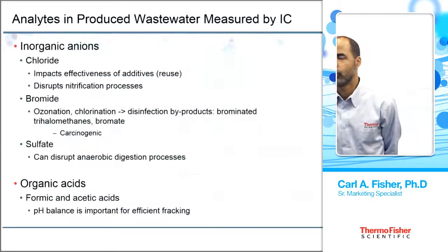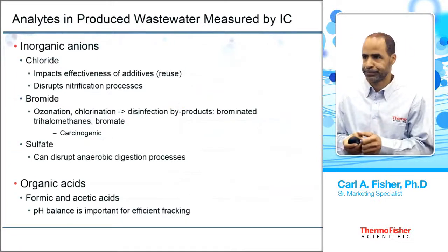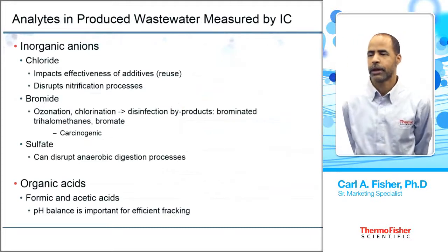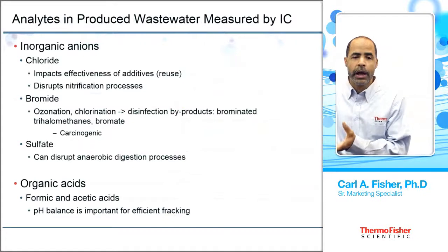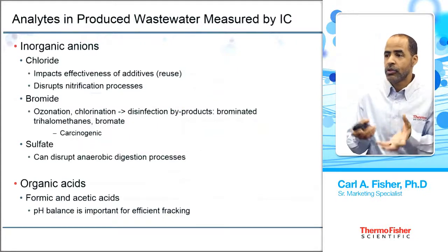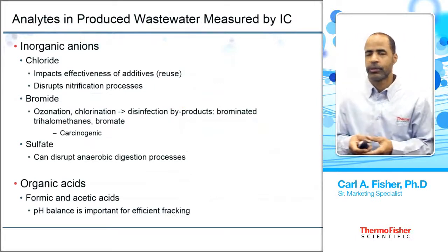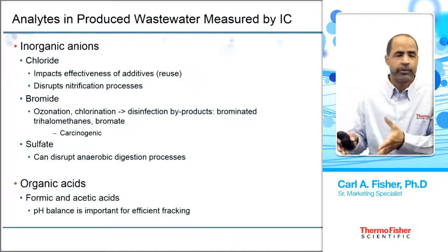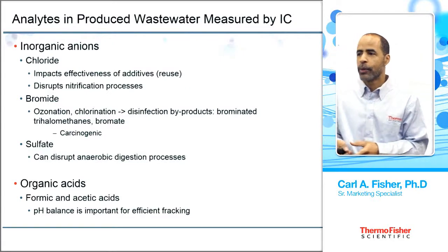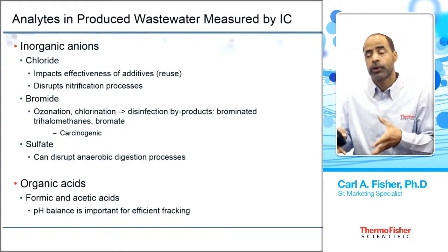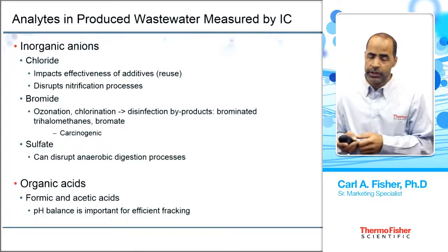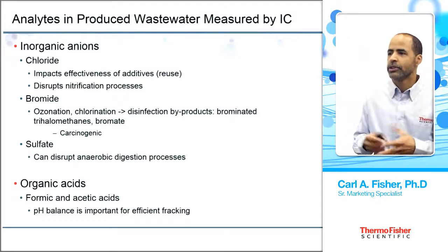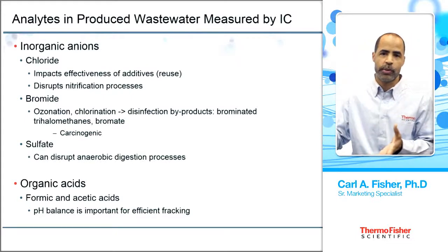Here are some analytes to examine when analyzing waste products. Starting with inorganic anions: chloride has a pronounced impact on the effectiveness of additives — if it's quite high you'll need to reduce it or adjust the additives to compensate. It can also disrupt the nitrification process downstream if the water is being treated for discharge to surface water or drinking water. Bromide is another key analyte because during water treatment such as ozonation, disinfection byproducts form — bromide is a carcinogen, and you really don't want that in your water.